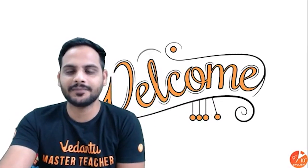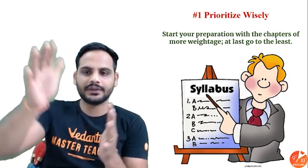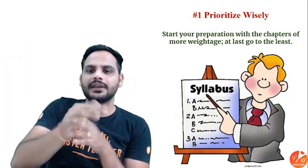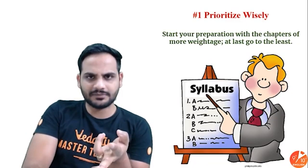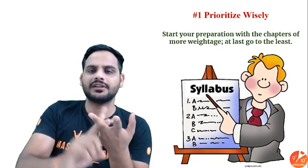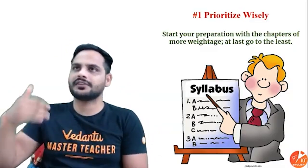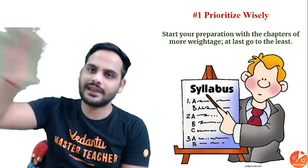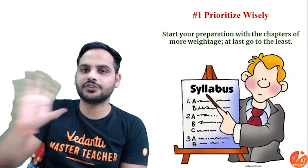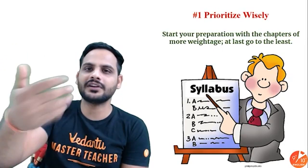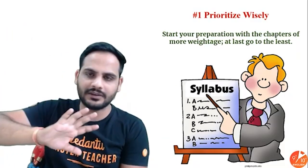The first tip is: prioritize wisely. Start your preparation with the chapters of more weightage and go to the least at the end. For grade 10th, there is real numbers, then the algebra section — polynomials, linear equations in two variables, quadratic equations, and arithmetic progression — then geometry, then mensuration. Start with algebra first, then geometry. If you finish algebra and geometry, 70% of your syllabus is done.